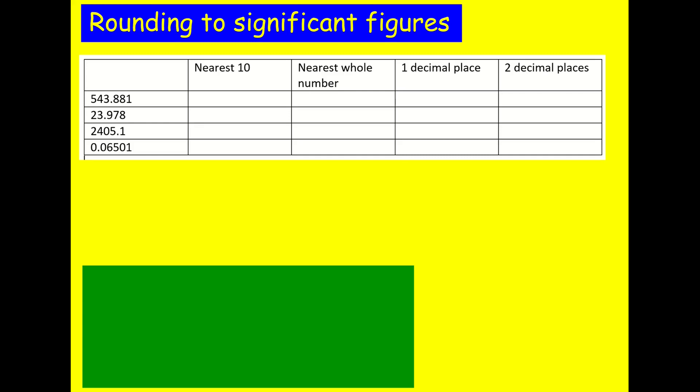The first thing I want you to do is have a go at this task here. I've got four numbers on the left and I want you to round them each to the nearest ten, the nearest whole number, to one decimal place and two decimal places. Please pause this video now and try that.